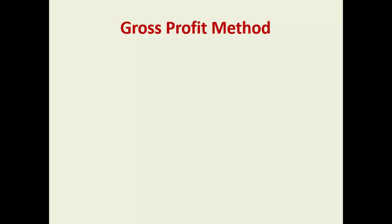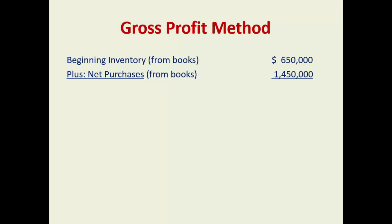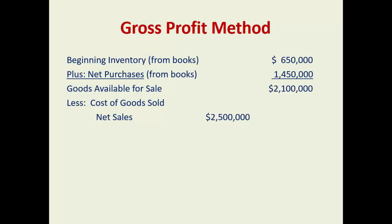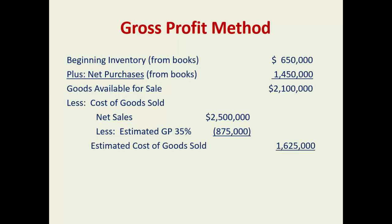So the gross profit method for estimating inventory: I start with my beginning inventory from my books, plus my purchases, so now I know what's available. But I don't know cost of goods sold and I don't know ending inventory. So I take my net sales less my estimated gross profit — based on the percentage I'm using — to give me an estimated cost of goods sold. Subtract that from the goods available, and that's my estimated ending inventory.